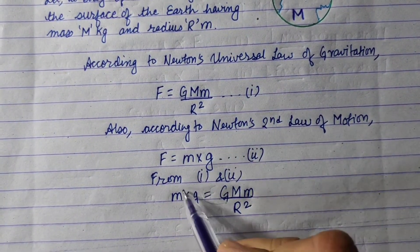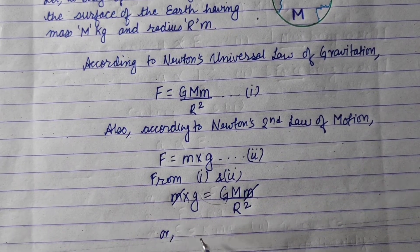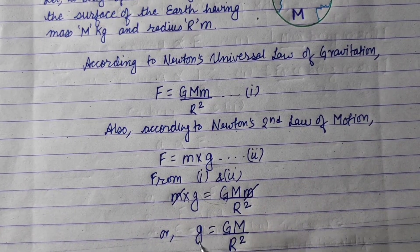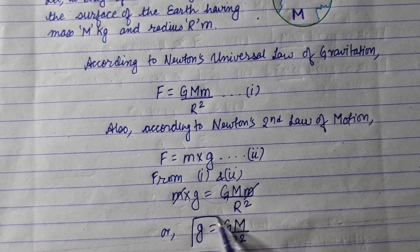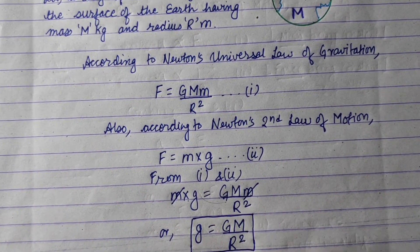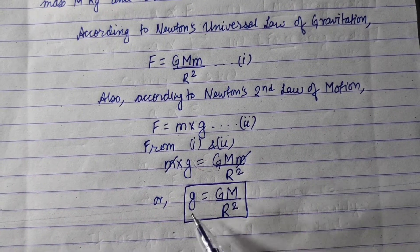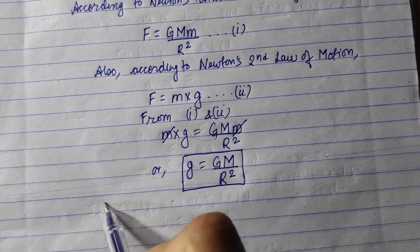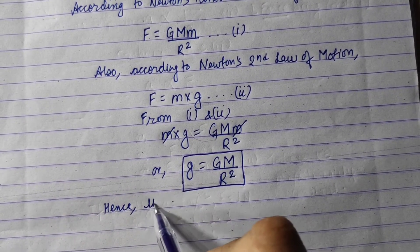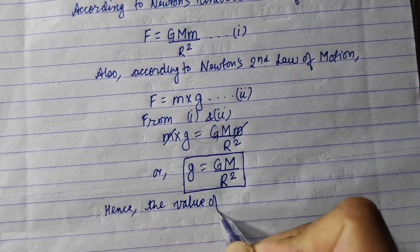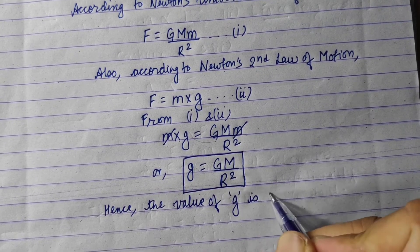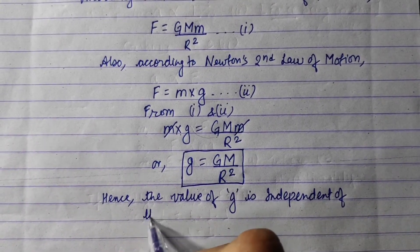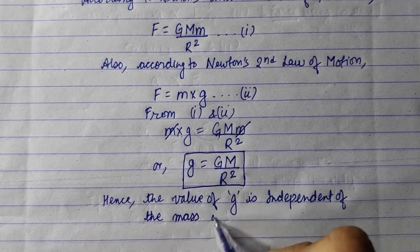Now, small m and small m cancel out. So we can write the mathematical relation to calculate acceleration due to gravity: small g equals capital G times capital M upon r square. So the value of g is independent of the mass of the object.